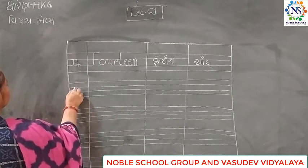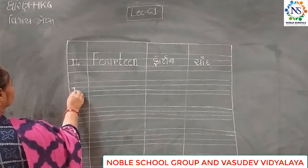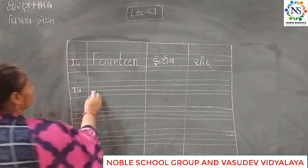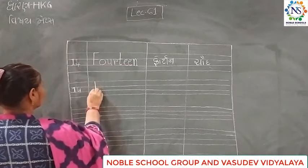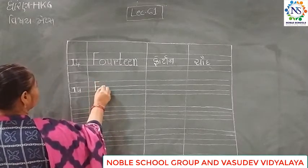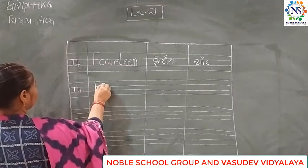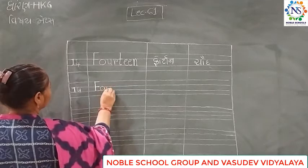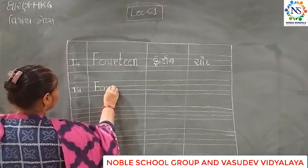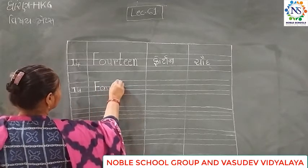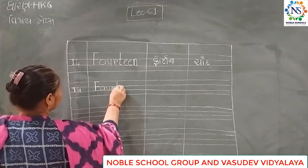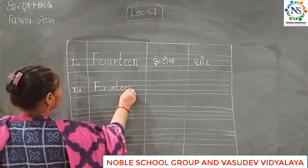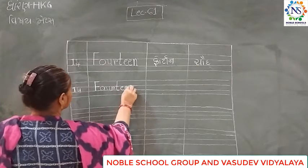Fourteen. So we have to choose the one. Fourteen. Also: A, O, U, R, E, E, A.